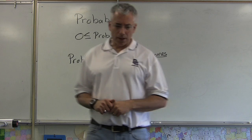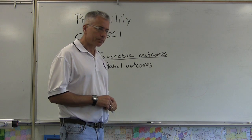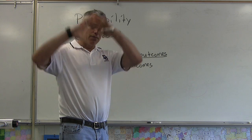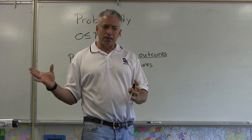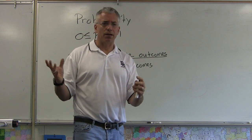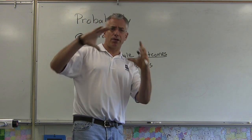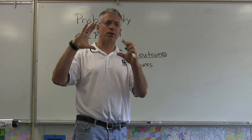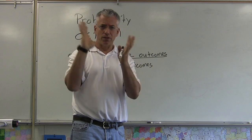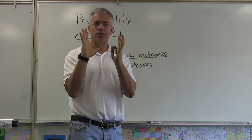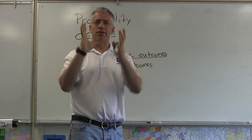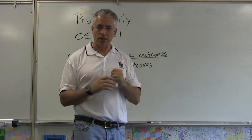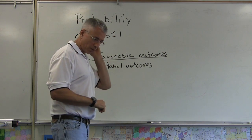If they ask you a probability on a geometric figure, say you have this big geometric figure and they say you're throwing a dart — what's the probability you're going to land in this little area right here? It might be a square or a triangle. The answer is going to be this favorable outcome area divided by the total area of the figure. So it's your favorable area divided by the total area.